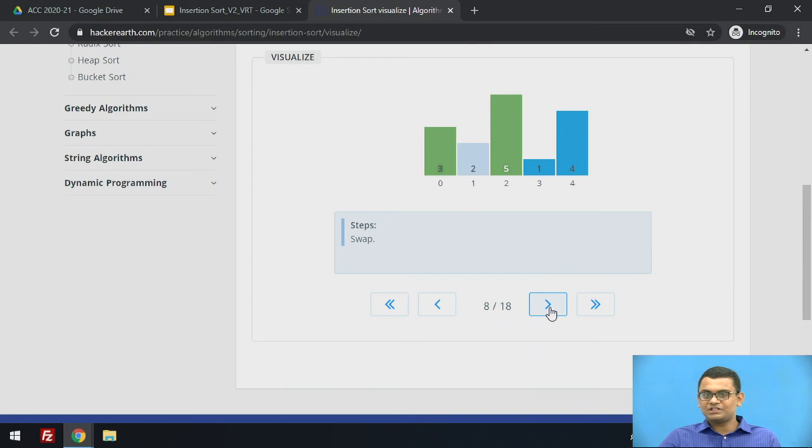We are shifting elements 5 and 3 just to make sure that the element 2 is in its right place. Now we see that the subarray from 0 to 1 is in the sorted order and it is highlighted by green color.